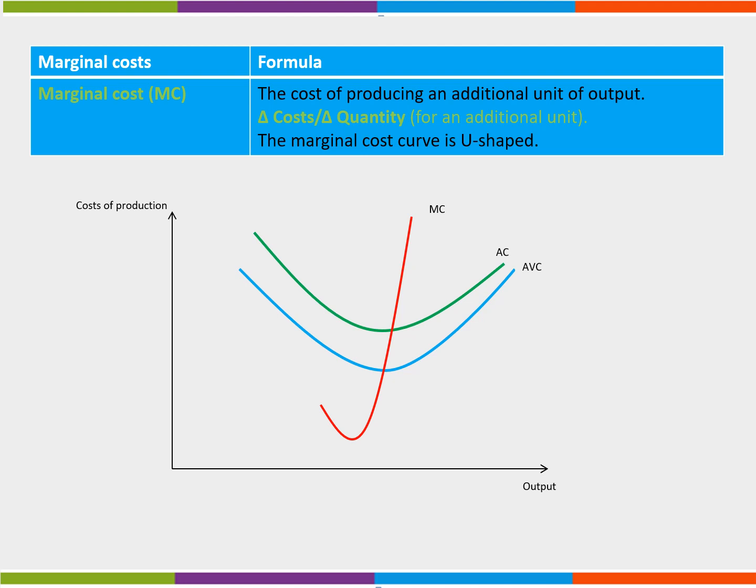The marginal cost curve always cuts the average and average variable costs at their lowest point. If marginal cost is below average cost, it will pull down the average. If it is above, it will increase the average.